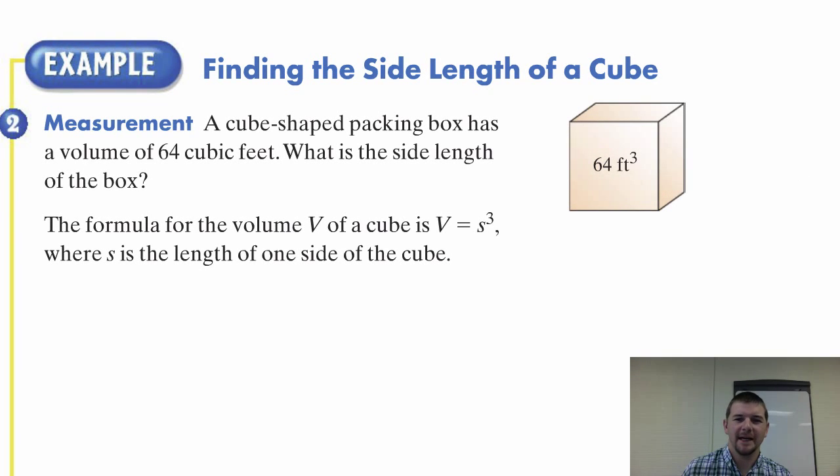Example problem two, finding the side length of a cube. Two says measurement: A cube-shaped packing box has a volume of sixty-four cubic feet. Cube shape, that's going to be important for us. Volume of a cube is just a special kind of rectangular prism where length, width, and height are all equivalent. Volume equals length times width times height, so we're really looking for a cube root here. We want to know what the cube root of sixty-four is.